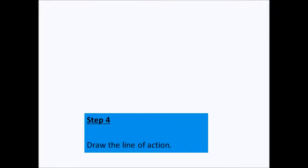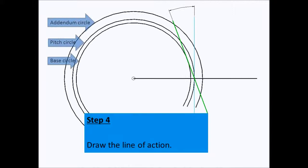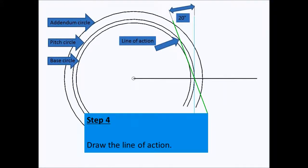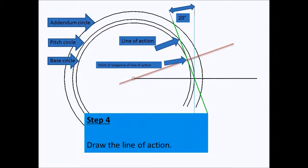We can now proceed with the next step, which is drawing the line of action. With the three circles we can draw the line of action, and we know that this line of action is 20 degrees from the vertical. At that point of tangency we can draw this line, which is also 20 degrees from the horizontal.